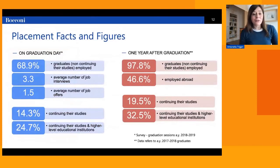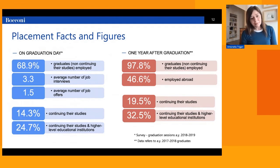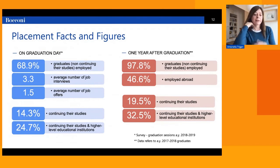Here are some placement numbers, organized at two moments. On graduation day, about 70% of ESS graduates — among those not continuing their studies — are already employed. By that day, ESS students have been invited to an average of 3.3 job interviews and received an average of 1.5 job offers. This is an extremely positive picture in terms of placement.